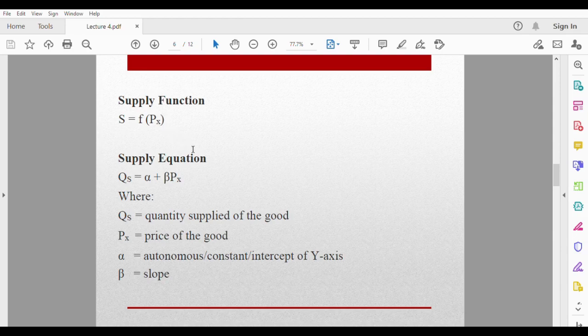This is our supply equation: Qs = α + βPx. Defining all the terms: Qs is quantity supplied of the good, and Px is the price of the good, assuming the good is called x. Alpha is autonomous or constant or intercept of y-axis. What does it mean? It is the part of supply that is not dependent on price.